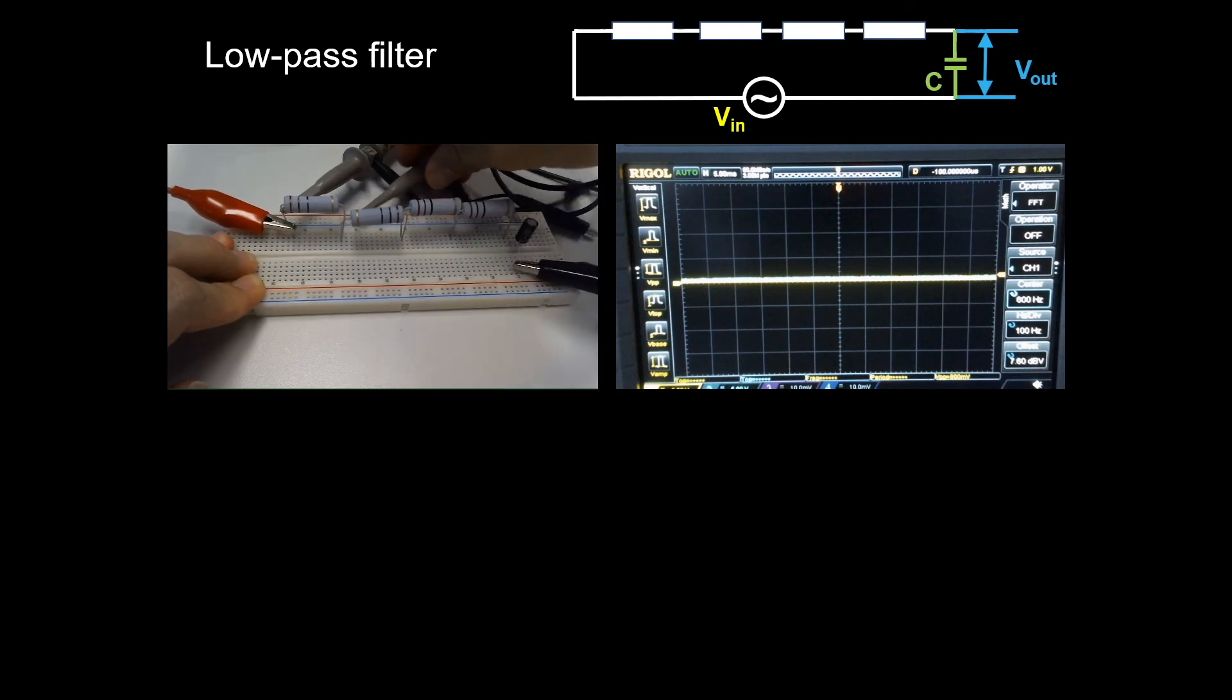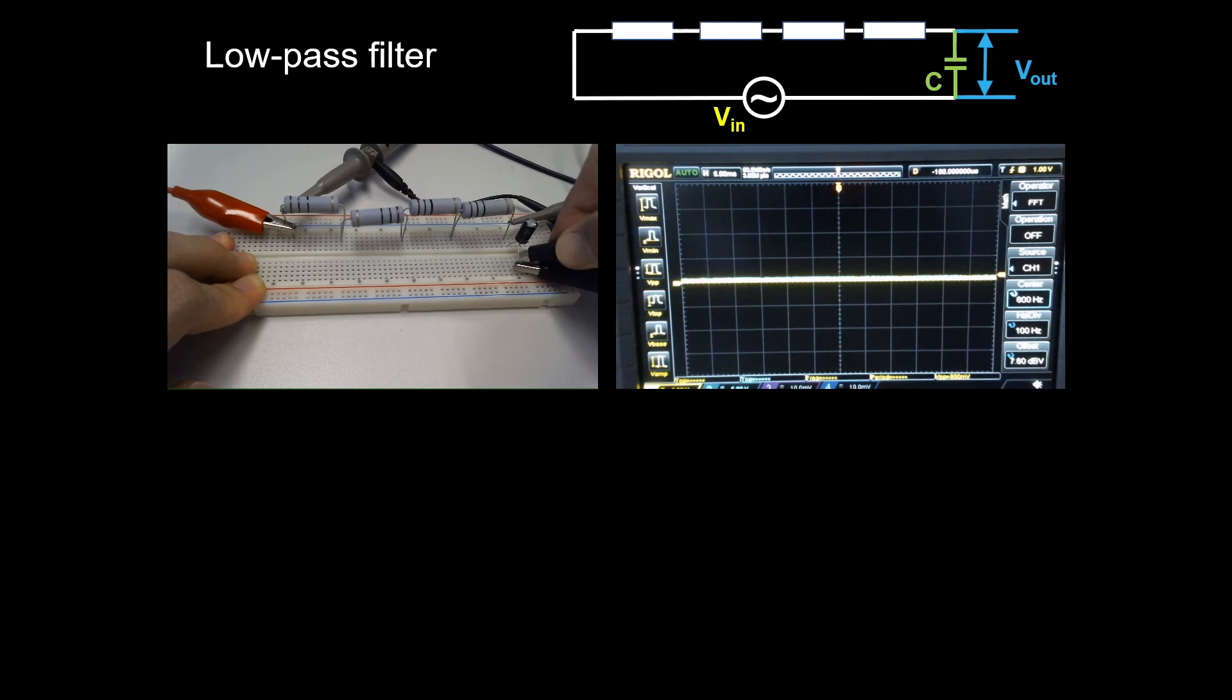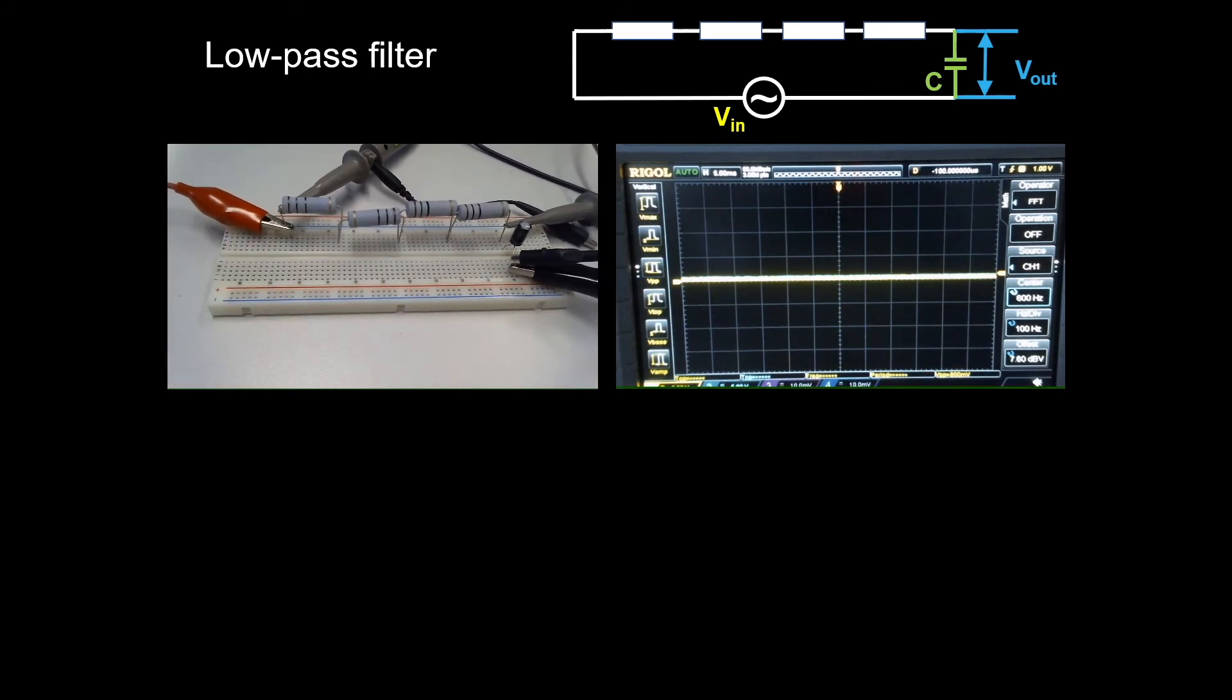The output signal is now the voltage across the capacitor. This is now the signal with the low-pass filter. What we can see is initially the input signal, the one in yellow, is not really sinusoidal, but afterwards, the one in blue is more sinusoidal.